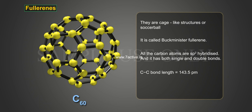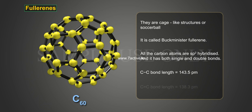The carbon-carbon bond length in fullerenes is equal to 143.5 pm.